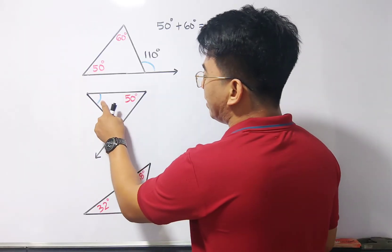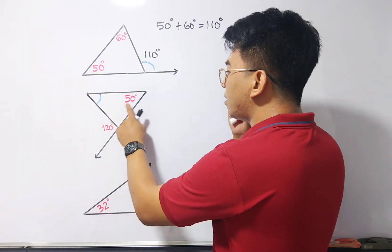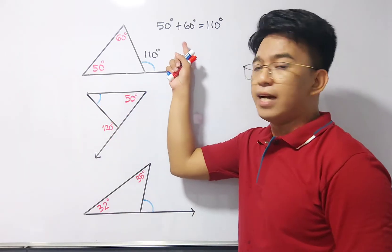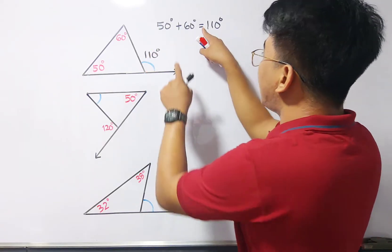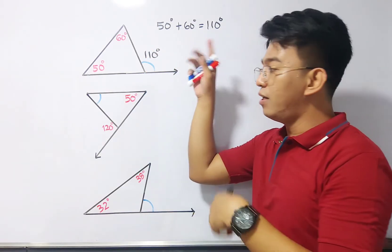So, as you can see, this is the missing angle, and then one of the angles is given. So, given this formula, we need to add the two angles, and that is equal to the measurement of the exterior.